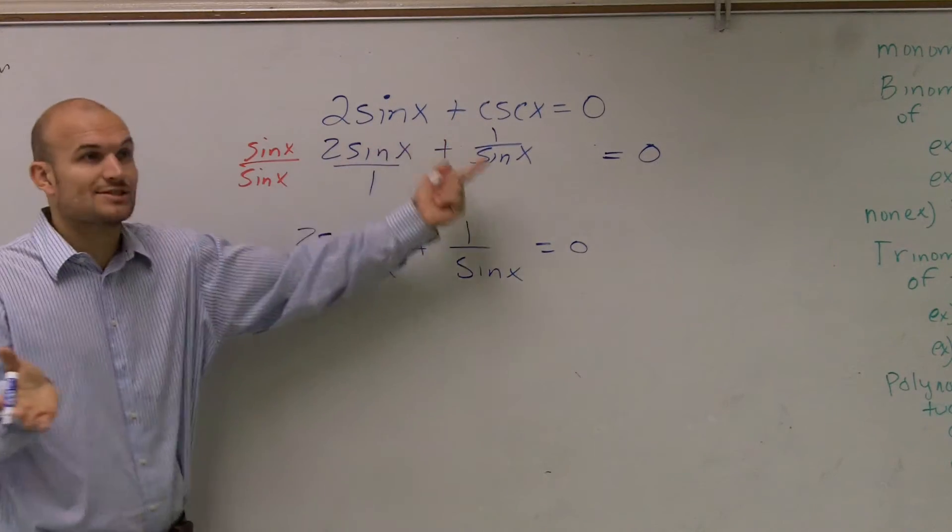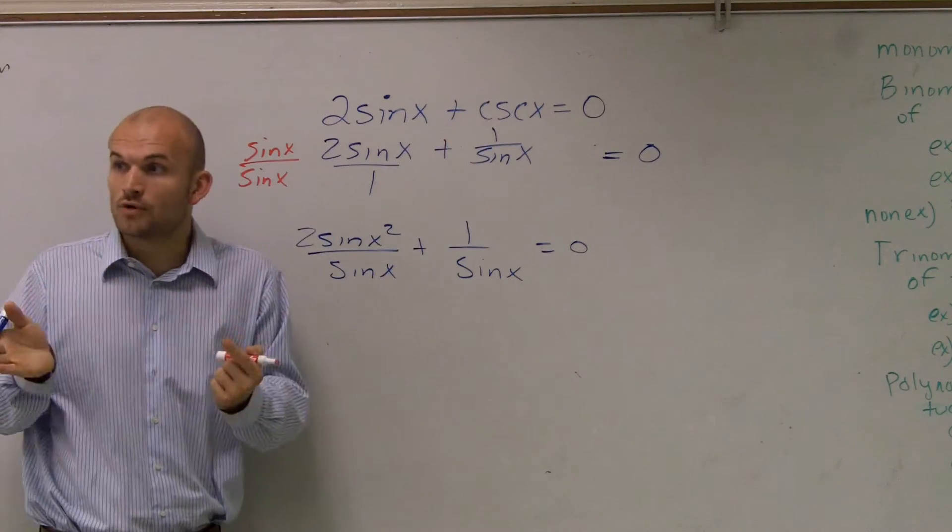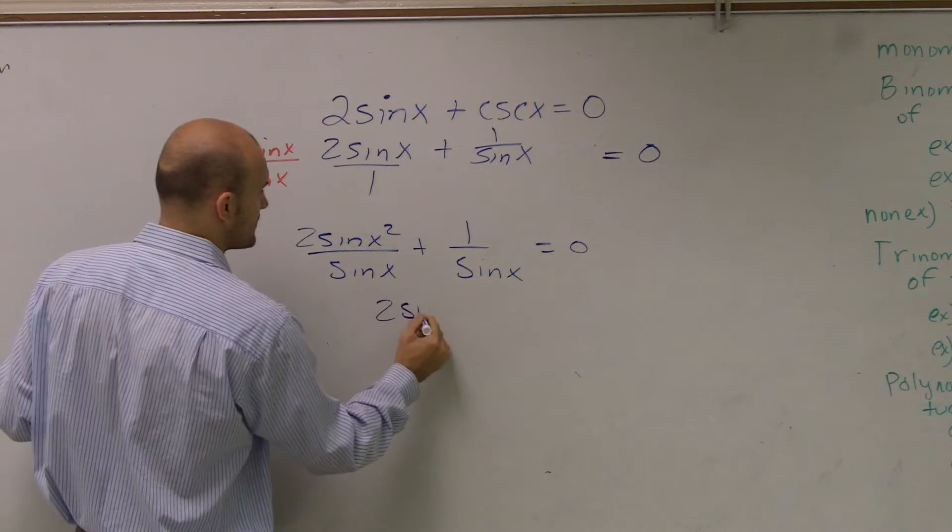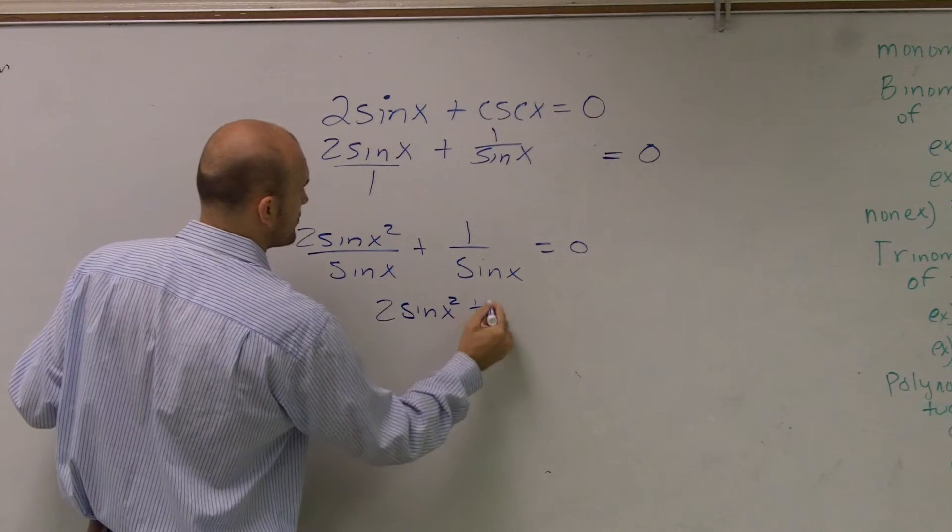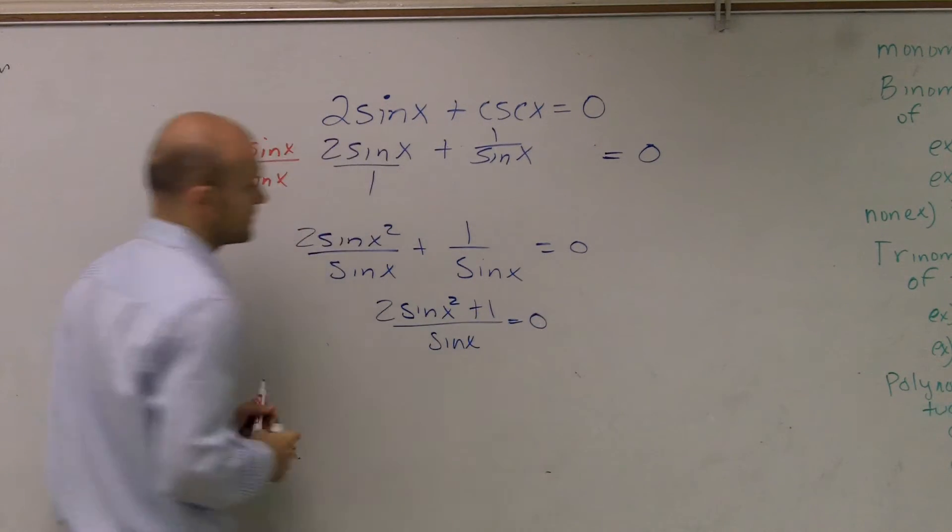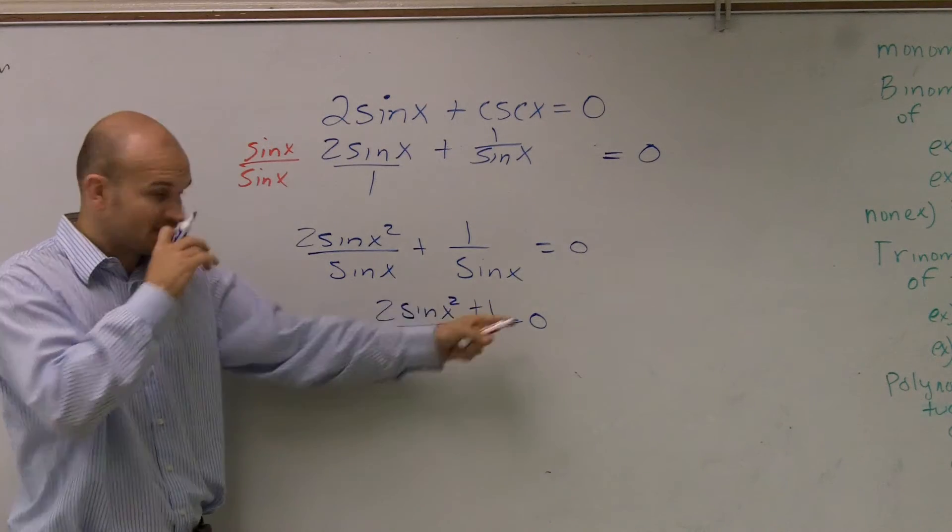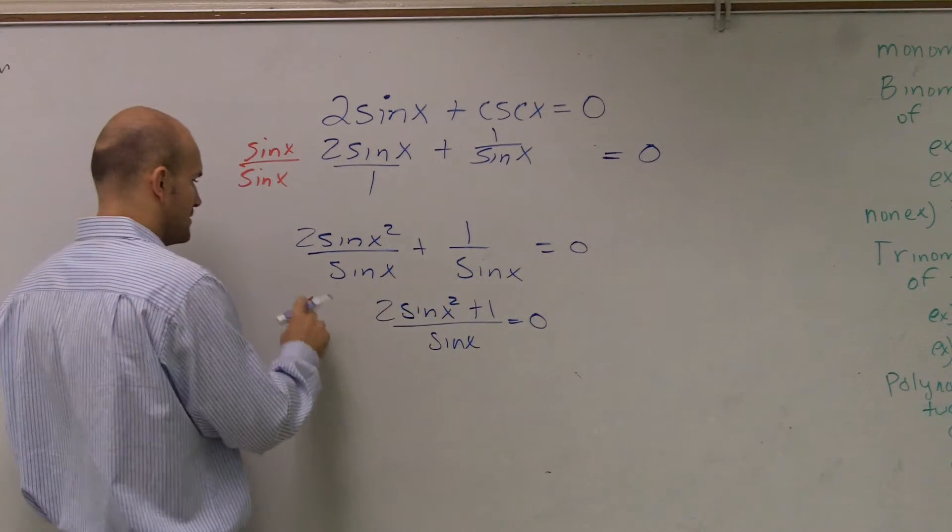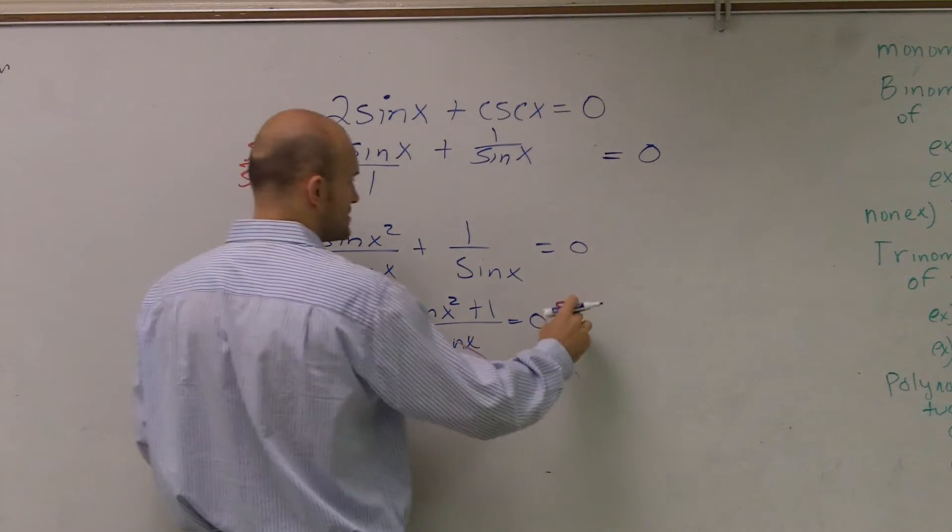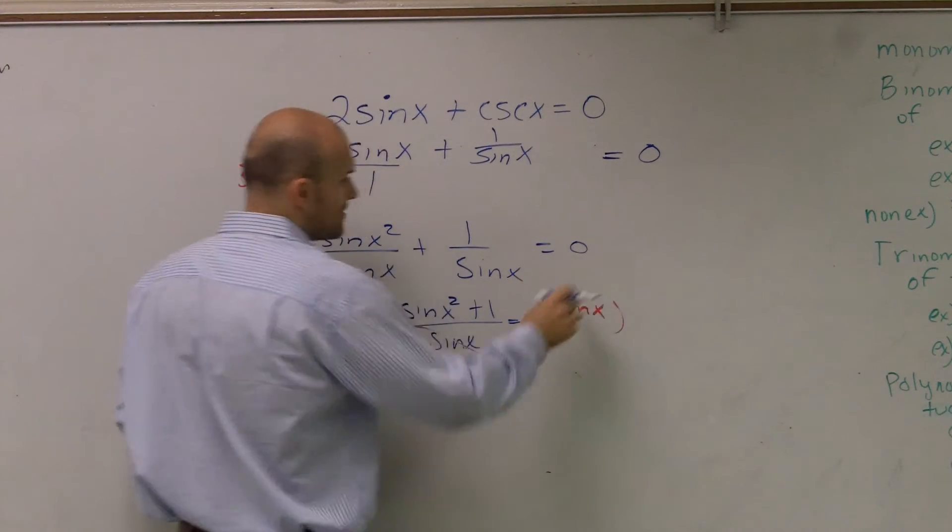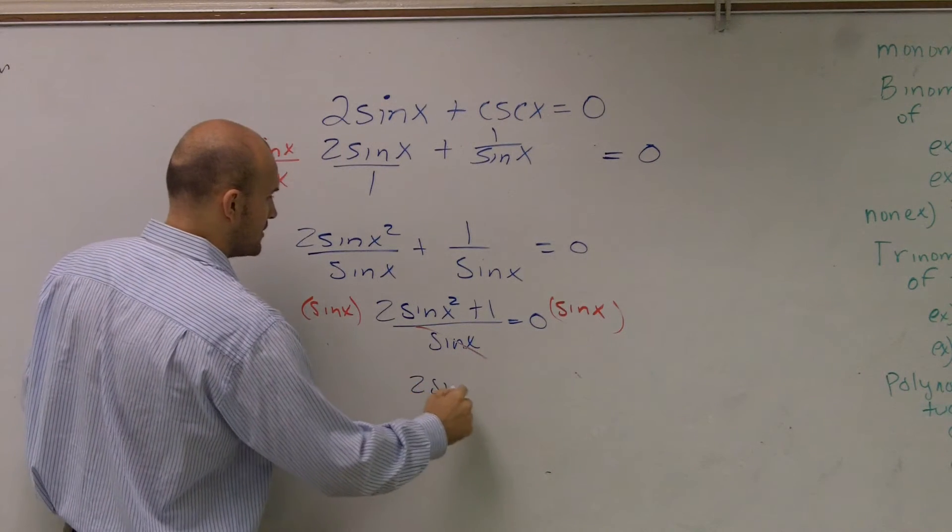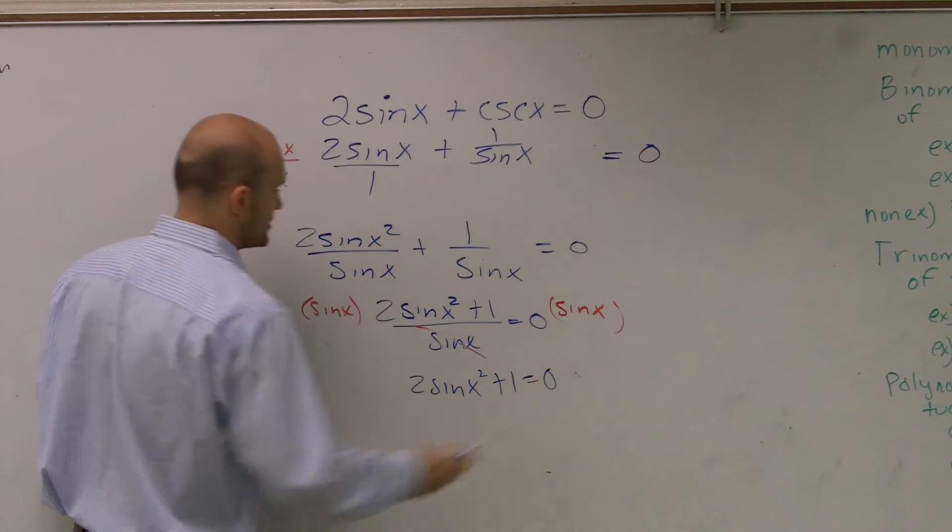Remember, when we're trying to solve, we need to get one value or we need to have it factored so we can use the zero product property. Well, here I can combine them now to 2 sine of x squared plus 1 over sine of x equals 0. Now this is okay because I need to solve for sine of x. So what I'll do is multiply by sine of x to get that off the bottom, right, on both sides. Obviously, that equals 0. So I get 2 sine of x squared plus 1 equals 0.